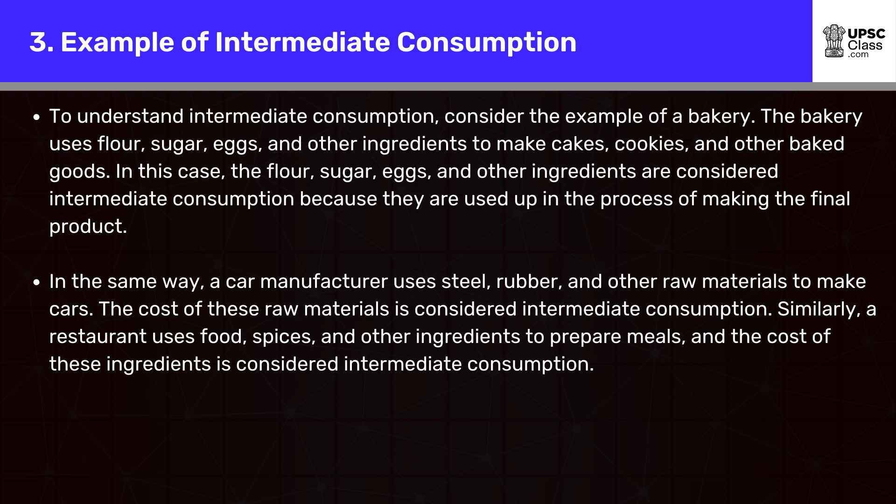In this case, the flour, sugar, eggs, and other ingredients are considered intermediate consumption because they are used up in the process of making the final product. In the same way, a car manufacturer uses steel, rubber, and other raw materials to make cars. The cost of these raw materials is considered intermediate consumption.